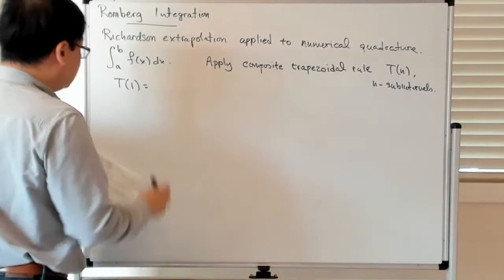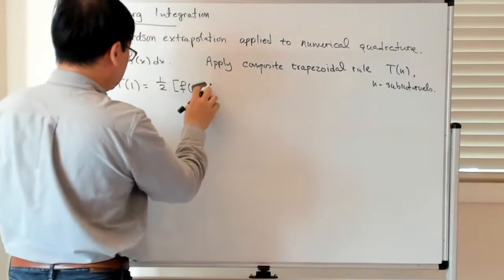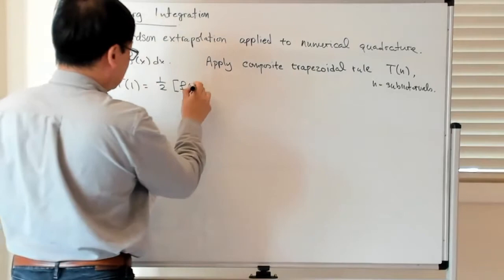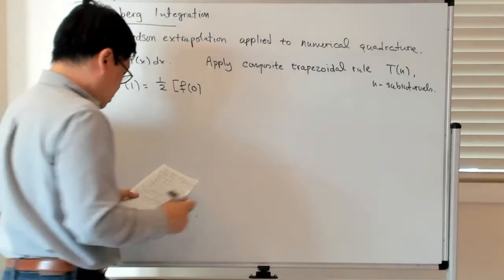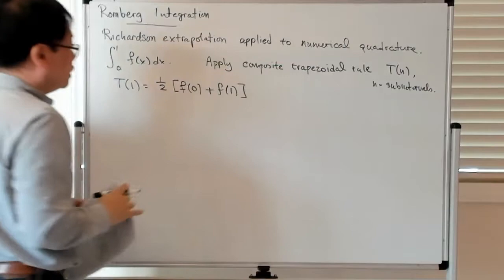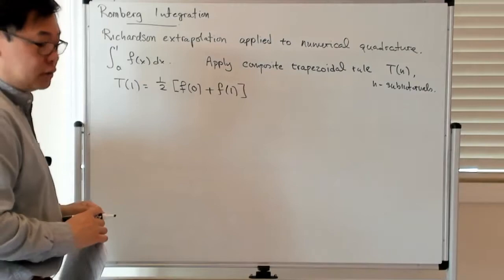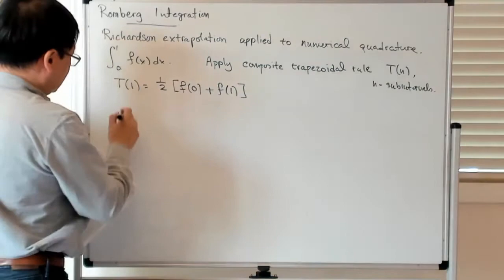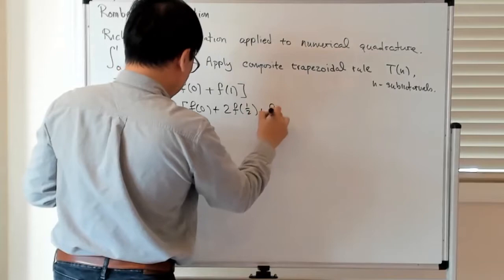T1 is just one-half times f evaluated at a. Let's change the limits of integration to 0 and 1 — there's no real loss of generality since you can always do a change of variables to rescale the interval. So the trapezoidal rule applied to an interval of length 1 is one-half times the sum of the function values at the two endpoints. Then T2, using two intervals, is one-quarter times f(0) plus 2f(1/2) plus f(1).